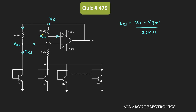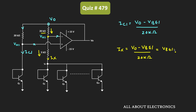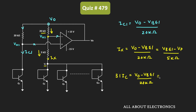Now let's find the current through the other 20kΩ resistor. The voltage at this node is equal to VBE1, so this current equals (Vout − VBE1) / 20kΩ, which is the same as current IX. So IX = (Vout − VBE1) / 20kΩ. The same current also flows through the 5kΩ resistor, so we can also write IX = (VBE1 − VP) / 5kΩ, where VP = 0.7V. And we know IX = 31 × IC, so: 31 × IC = (Vout − VBE1) / 20kΩ = (VBE1 − 0.7V) / 5kΩ.